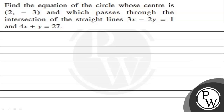Hello. Let's read the given question. The question states: find the equation of the circle whose center is (2, -3) and which passes through the intersection of the straight lines 3x minus 2y equals 1 and 4x plus y equals 27. The key concept to solve this question is the center form of a circle.